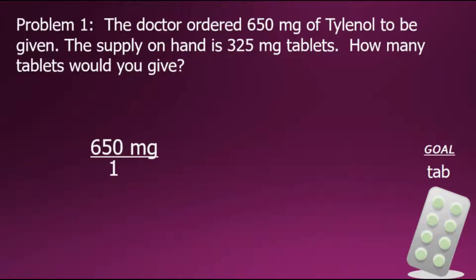Here you see the 650 milligrams over 1. Next, we will find a conversion factor fraction such that it allows us to convert from milligrams into tablets for this example. So we'll multiply by a fraction that will cancel out our current unit of milligrams. To do so, we'll have to place the milligrams in the denominator of this conversion fraction.